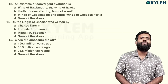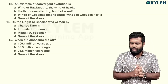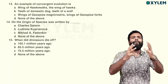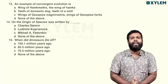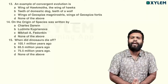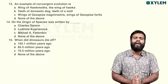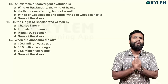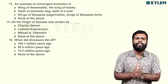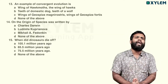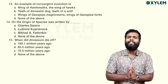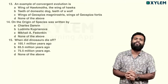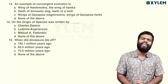An example of convergent evolution is. Convergent evolution involves analogous organs — functionally they are the same but structurally different. For example, wings of a bird and wings of a butterfly have the same function but different structure. So option A is right — convergent evolution because of analogous organs.